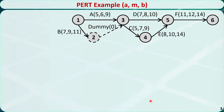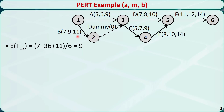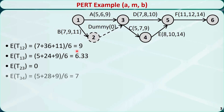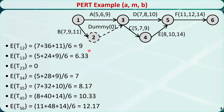Let's check PERT with this example. We have seen this house building example in previous videos. We use PERT to estimate the values of A, M, and B for every activity. For example, under the most favorable conditions, the duration of activity B, represented by t12, is 7 days. Under the most likely condition, the duration is 9 days. And under the least favorable conditions, the duration is 11 days. Using the formula: 7 plus 4 times 9 plus 11 divided by 6, the expected duration is 9 days. Following the same procedure, we can find the expected durations of all other activities. The duration of the dummy activity is always 0.